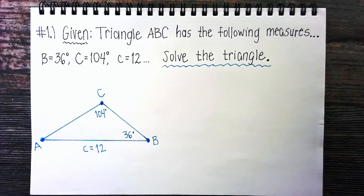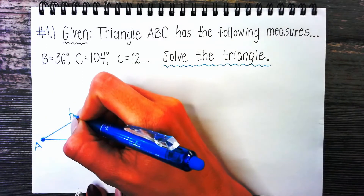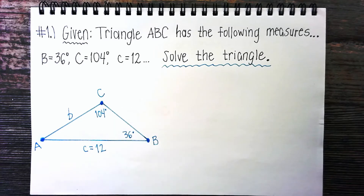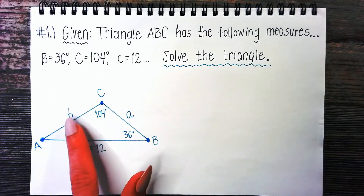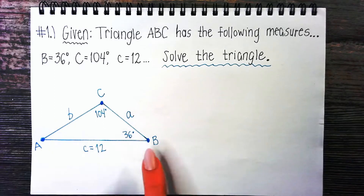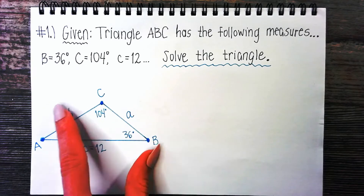Now we're going to solve the triangle — that means finding all the missing sides and all the missing angles. I'm also going to label lowercase a and lowercase b on this picture. The lowercase letter for a side should match the capital letter diagonally opposite from it — so angle and side are a little pair.